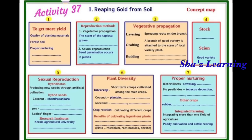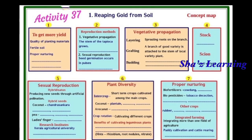Then, budding. Budding means preparing good quality plants by grafting a bud of one plant to another plant of the same species. In budding there are two parts: stock and scion. Stock is the main plant, also called the local variety plant.